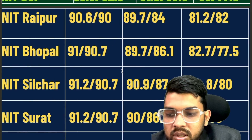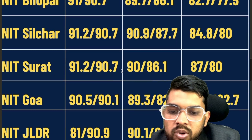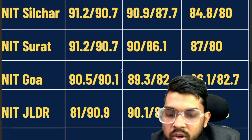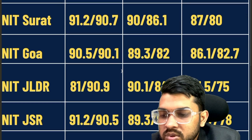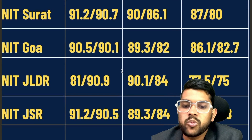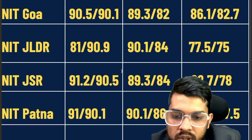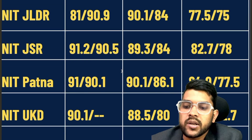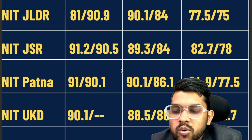For NIT Goa: 90.5, 89.3, 86.1. For NIT Jalandhar: 81, 90.1, 77.5. For NIT Jamshedpur: 91.2, 89.3, 82.7. For NIT Patna: 91, 90.1, 84.9. For NIT Uttarakhand: 90.1, 88.5, 86.1.